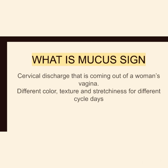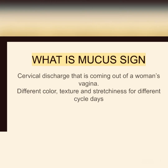Before we move further, I would like to explain some terms: mucus sign, menses, egg whites, and calendar period. The mucus sign is the discharge that comes out from a woman's vagina — it can have different color, texture, and stretchiness on different days of the menstrual cycle. The menstrual cycle starts on the first day a woman sees her menses and ends the day before the next menses.